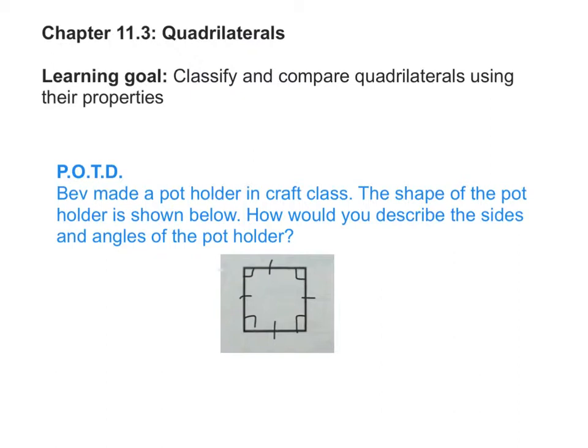Let's talk about this problem of the day. Bev made a potholder in craft class — potholders are those things you put under a hot pot so it doesn't burn your countertop or table. The shape of the potholder is what you see right here. How would you describe the sides and the angles of this potholder? Marcus? The shape is a quadrilateral with four congruent sides, four right angles, and four vertices.